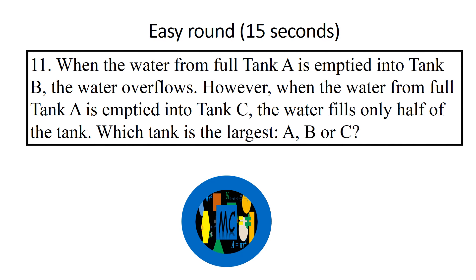When the water from full tank A is emptied into tank B, the water overflows. However, when the water from full tank A is emptied into tank C, the water fills only half of the tank. Which tank is the largest: A, B, or C?